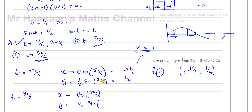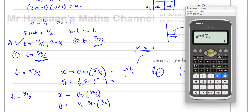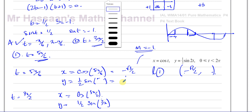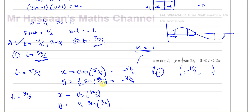There's a correction here: the y-coordinate for t = 5π/6 should use sine of 5π/3 — not π/3 — so the y-value is minus √3/4, not a quarter. Cosine of 3π/2 is 0, and a half times sine of 3π is also 0. So the point for t = 3π/2 is the origin (0, 0).